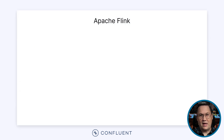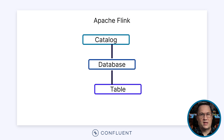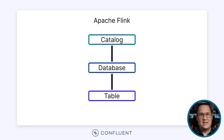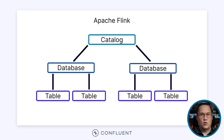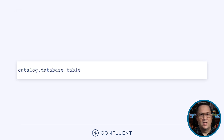The Flink Table API works with a variety of objects, including catalogs, databases, and tables. These are organized into a hierarchy with catalogs at the top, followed by databases, and then tables. Each catalog contains one or more databases, and each database contains one or more tables. To identify a specific table, you need to know which catalog and database it lives in. Then you can construct a unique identifier for the table, as shown.